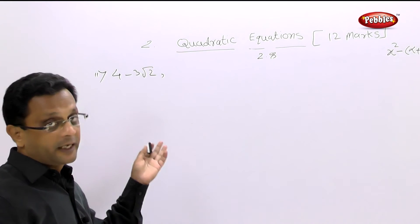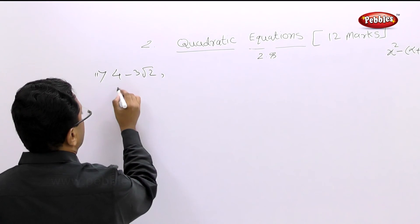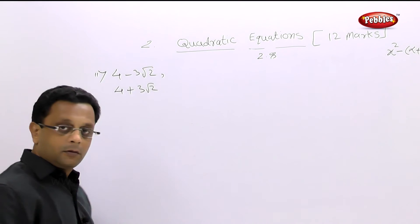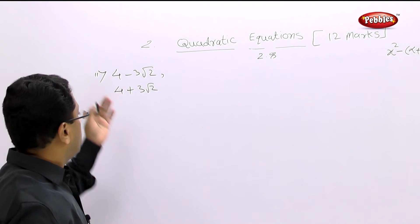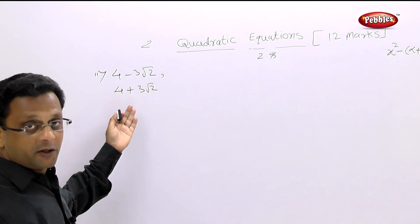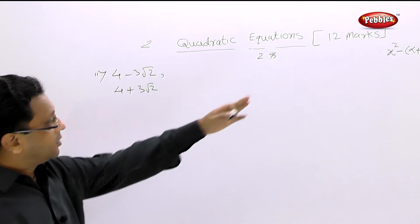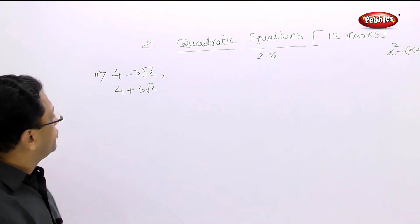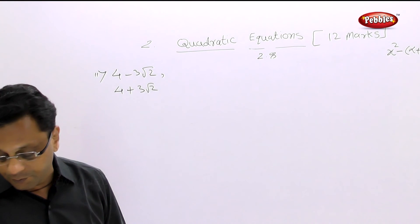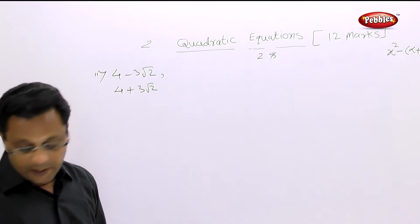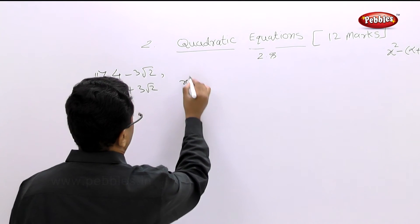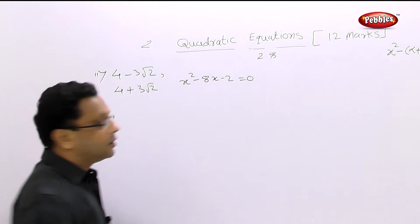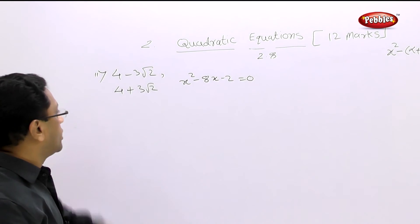The second example: the one root given is 4 minus 3 root 2. What will be the second root? It will be 4 plus 3 root 2. Find alpha plus beta, alpha times beta, substitute, and get the quadratic. The answer for the second example is x squared minus 8x minus 2 equal to 0. Check your answer.